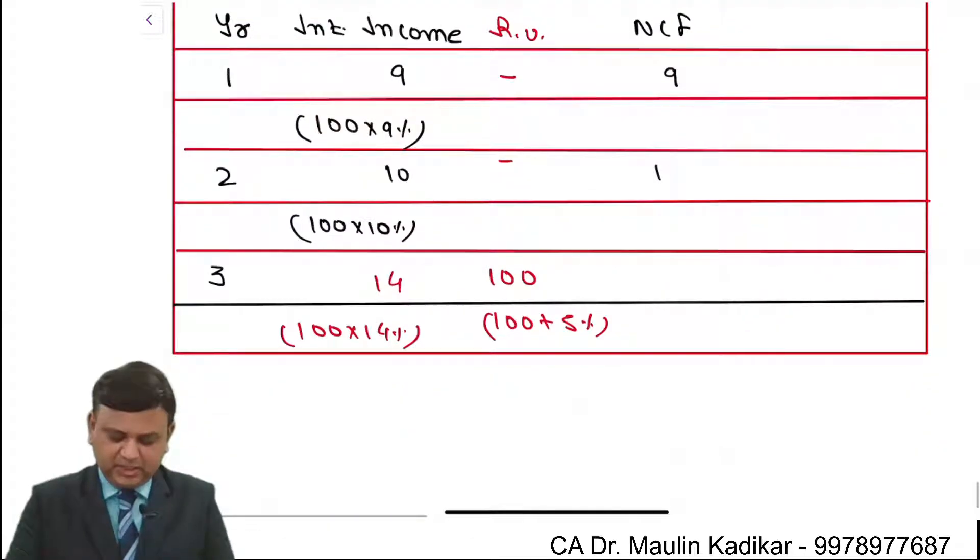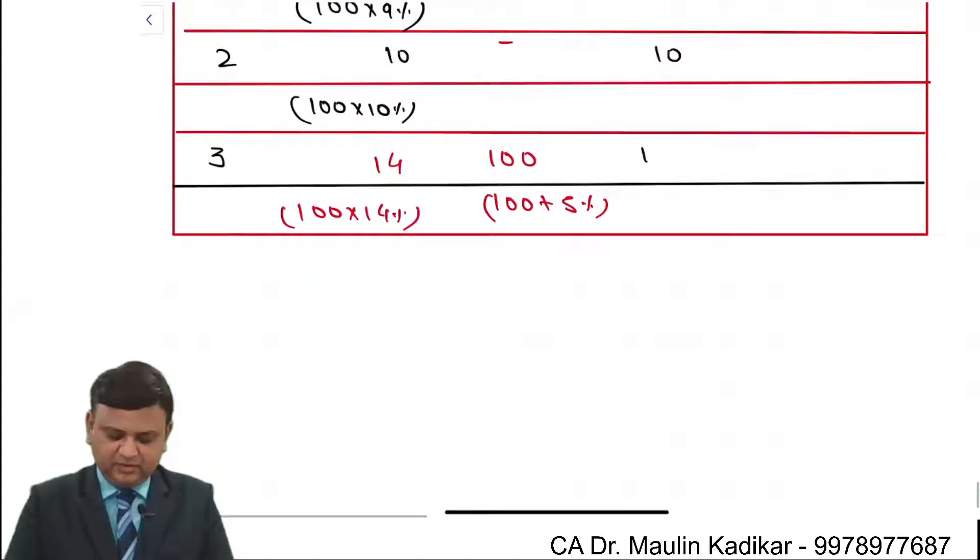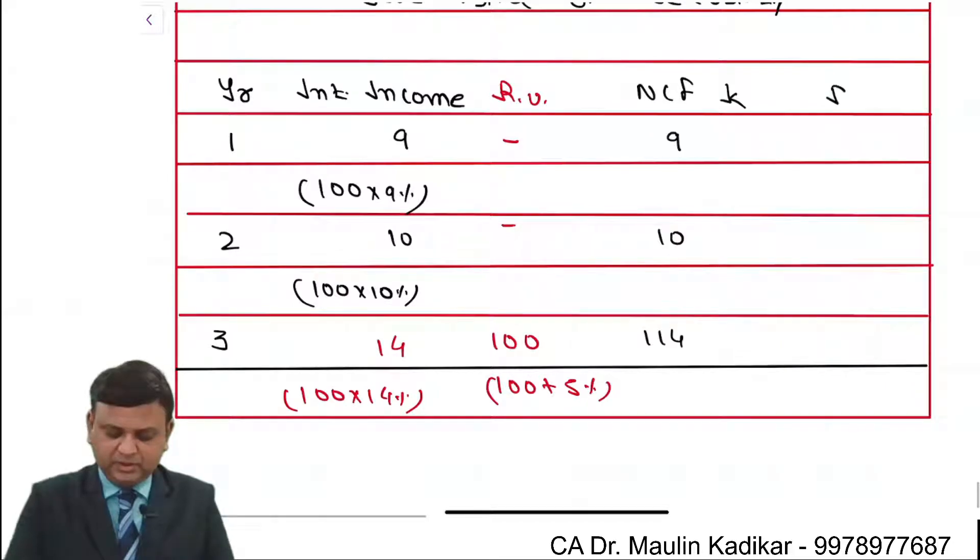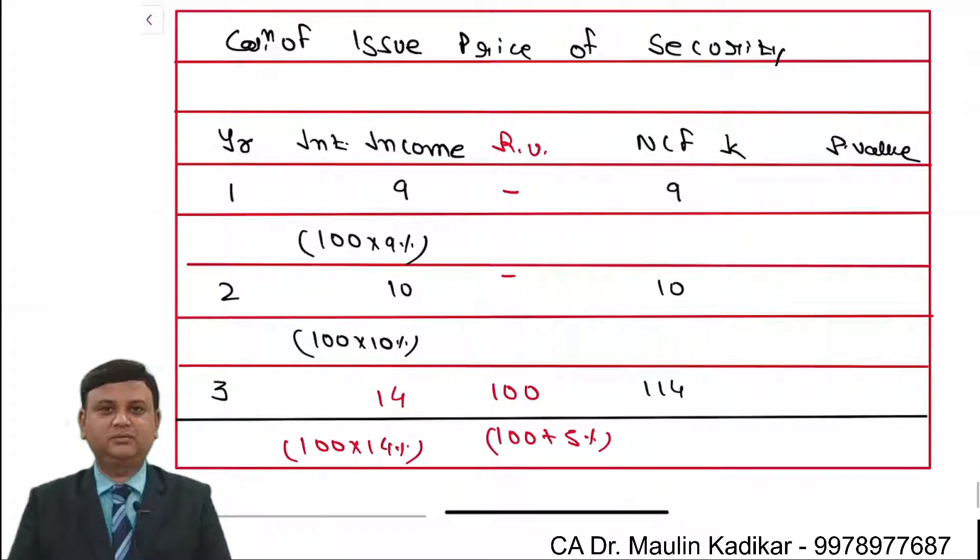Year 1, 9, year 2, 10, year 3, 1, 1, 4. Now it will be discounted to compute the present value and based on that the price will be found.